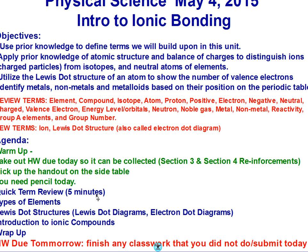So we're going to do a quick term review where you fill in your vocabulary words. Then we're going to talk about the types of elements — metals, nonmetals, metalloids. Then we're going to look at how to draw a Lewis dot structure, and then we're going to talk a little bit about the basic ionic compound. At the end, we have a graded wrap-up that you're going to do, and that will be collected at the end of the period.